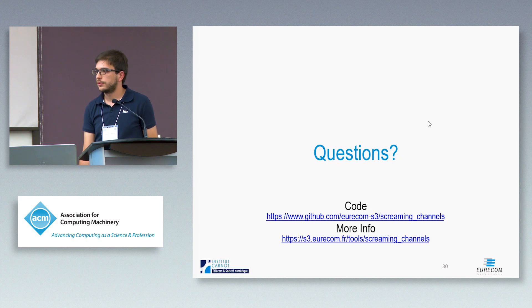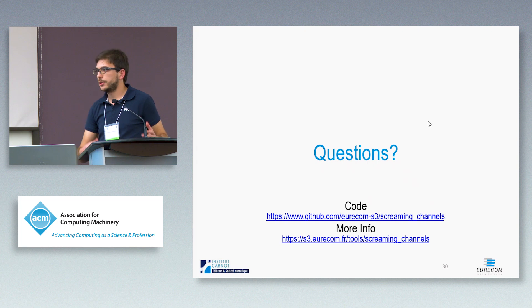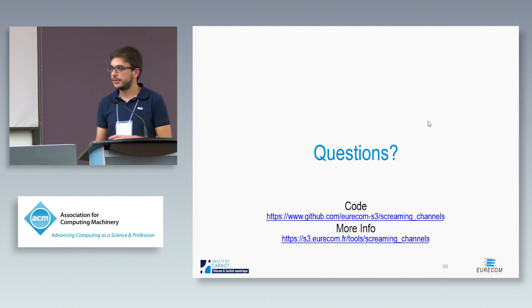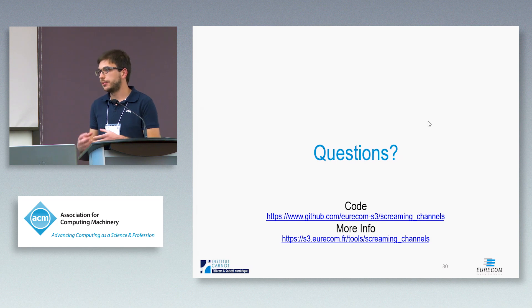Question from University of California Riverside: There is work in the system-on-a-chip community about EMI shielding to keep the chip from interfering with the transmitter. Do you have a sense of what is causing the coupling on the chip you tested, and would techniques like that potentially help prevent this problem? Response: We thought about substrate coupling because we are talking about mixed signal chips, but also coupling through the power supply. On that specific chip, we think the coupling goes through the power supply, and it may also be on the ground lines at the PCB level — so probably for each device it would be necessary to investigate exactly where the coupling occurs.